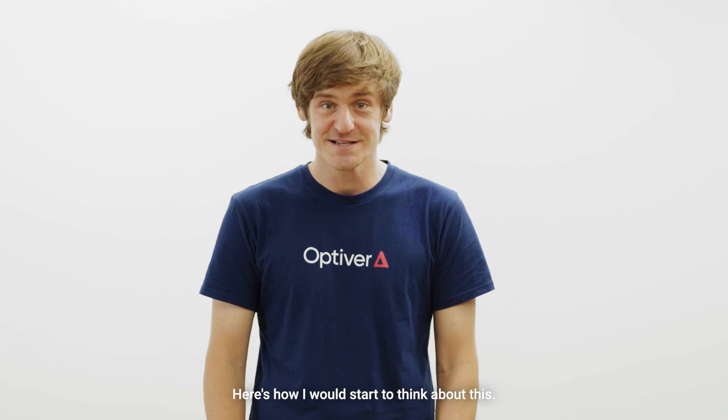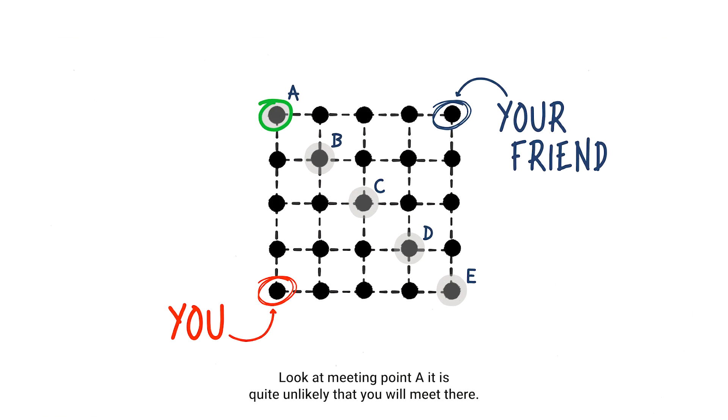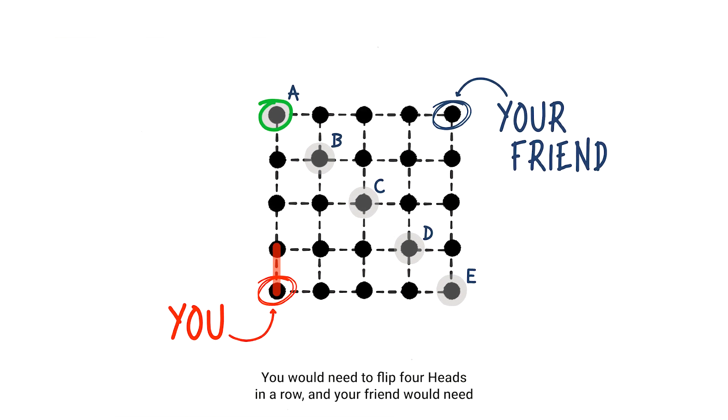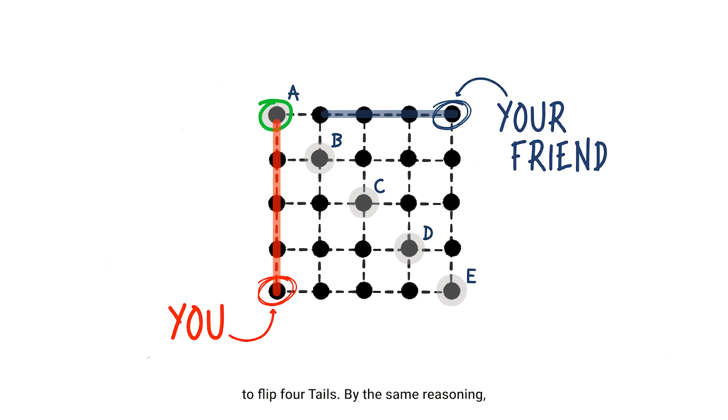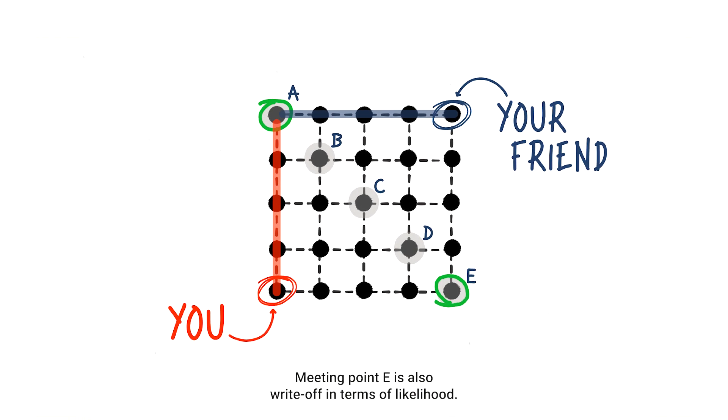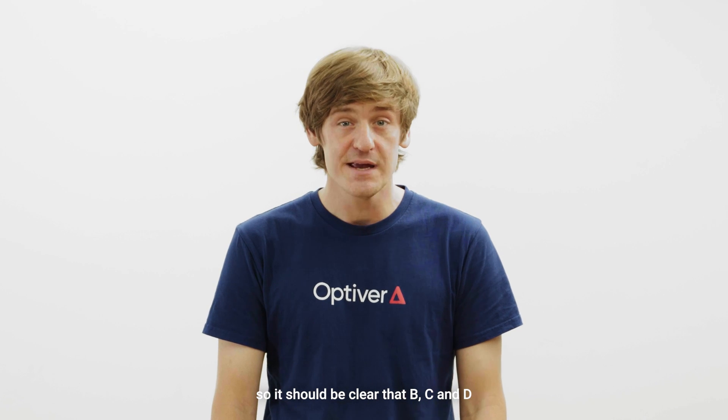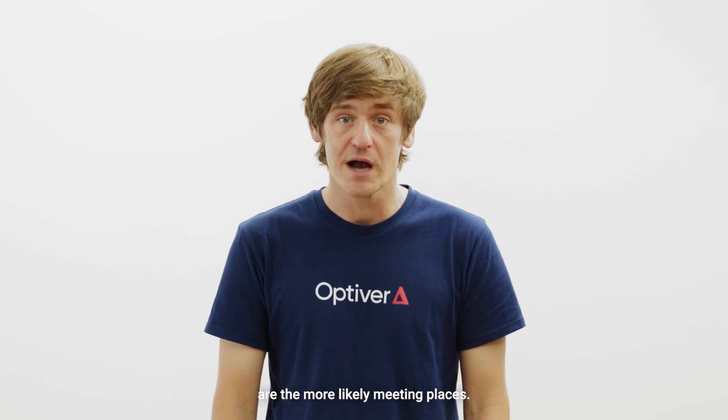Here's how I would start to think about this. Look at meeting point A. It is quite unlikely that you will meet there. You would need to flip four heads in a row, and your friend would need to flip four tails. By the same reasoning, meeting point E is also a write-off in terms of likelihood.